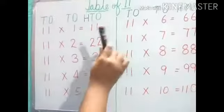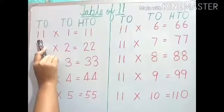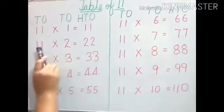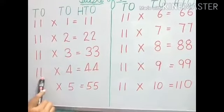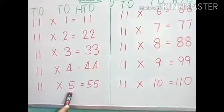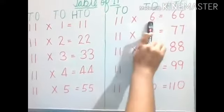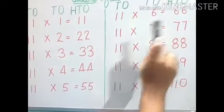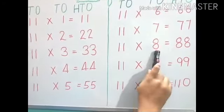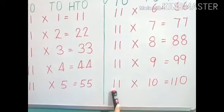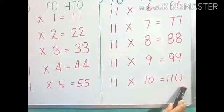So again we will read the table of 11. 11, 1s are 11. 11, 2s are 22. 11, 3s are 33. 11, 4s are 44. 11, 5s are 55. 11, 6s are 66. 11, 7s are 77. 11, 8s are 88. 11, 9s are 99. 11, 10s are 110.